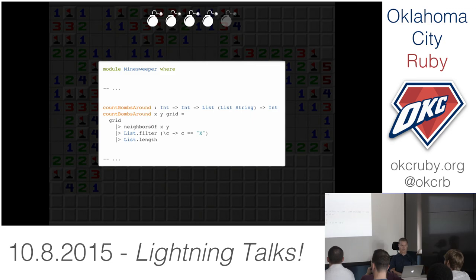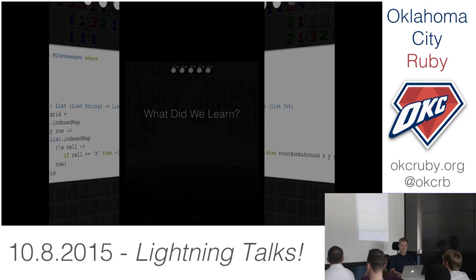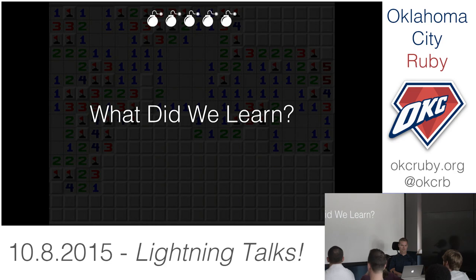After that, counting bombs is pretty much as straightforward as it is in Ruby — grab neighbors, look for X's. And the last step of converting the entire thing is very similar to Ruby: copy the data structure through, return negative one if we see bombs, and count bombs otherwise. So that's it — that's all the different solutions we've seen to this one problem.